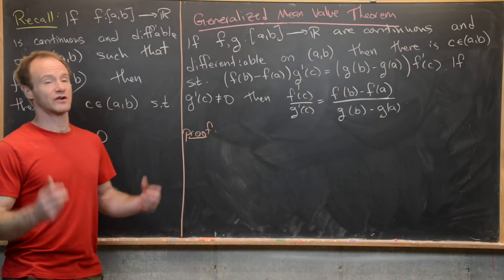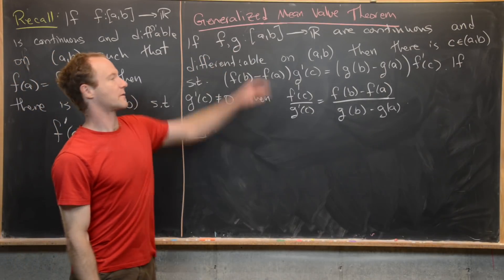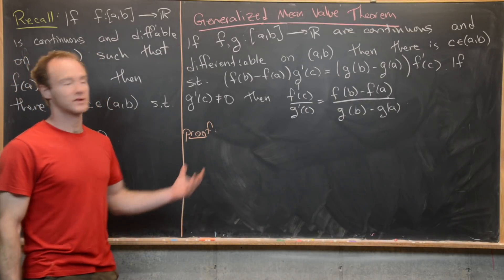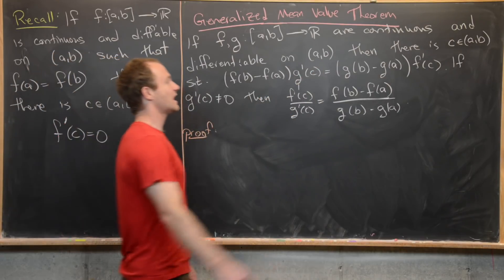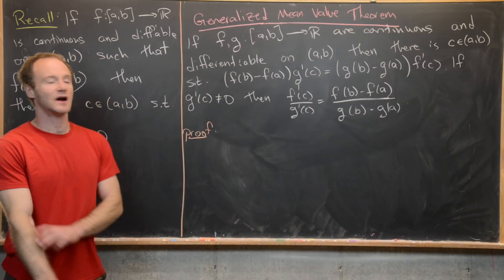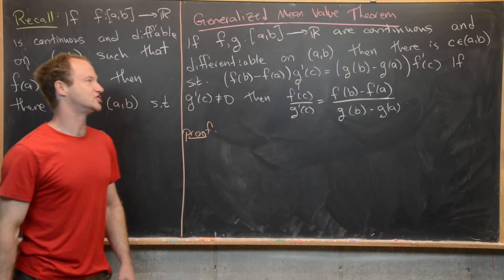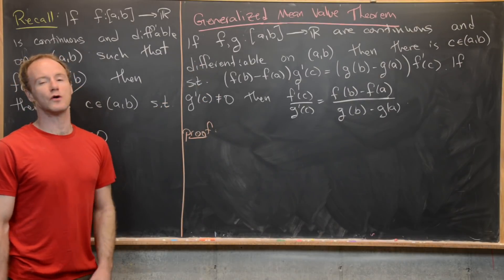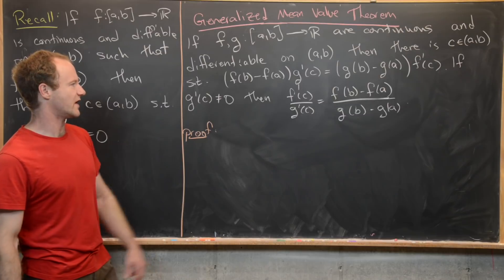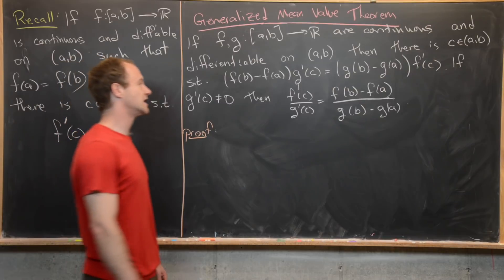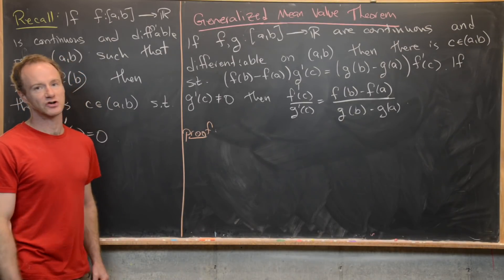Now we want to look at the generalized mean value theorem, which involves two functions. We have two functions f and g mapping from the closed interval [a, b] to ℝ, continuous on the entire closed interval and differentiable on the corresponding open interval. We get the existence of some c on the open interval where f(b) − f(a) times g'(c) equals g(b) − g(a) times f'(c). If g'(c) ≠ 0, we can rearrange this as f'(c)/g'(c) = [f(b) − f(a)] / [g(b) − g(a)], comparing the change of two functions on an interval.